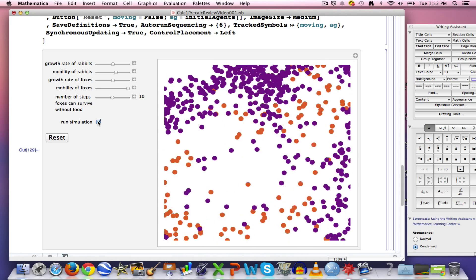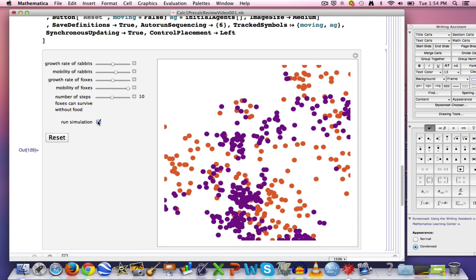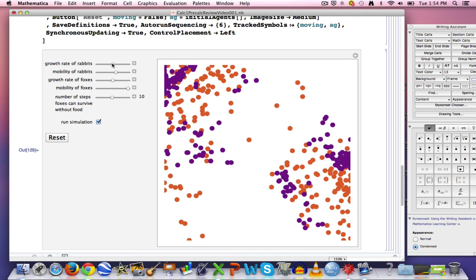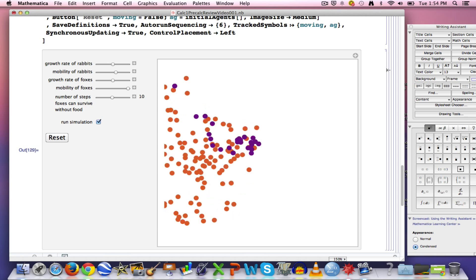I want to run the simulation here, and you can watch how the foxes chase after the rabbits and try to eat them, so we've got a spatial component to this as well. And you can change different parameters. You can change the growth rate of the rabbits and their mobility. It's kind of a very neat simulation.